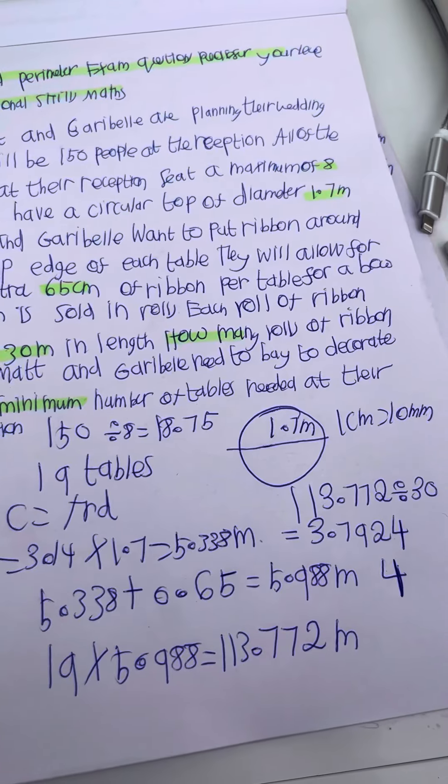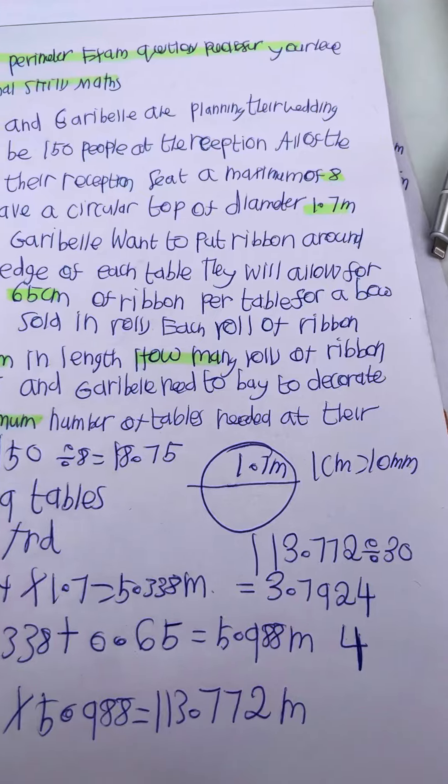If we do 150 divided by 8, that's 18.75. You can't have parts of a table, so it has to be 19 tables.